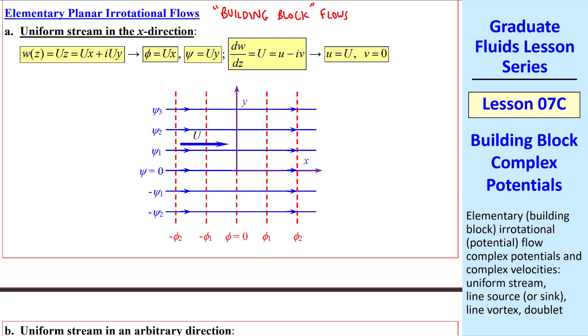Now let's define some elementary planar irrotational flows, or what I like to call building block flows. The simplest case is that of a uniform stream in the x-direction. Streamlines are parallel horizontal lines, and the equipotential lines are vertical parallel lines. Here we start with the complex potential, which is uz, or written out with z equals x plus iy, from which we get phi and psi. And when we take the derivative of w, we get the complex velocity, u minus iv, from which u equals capital U, the magnitude of this velocity, and v equals zero.